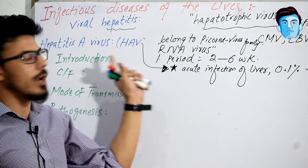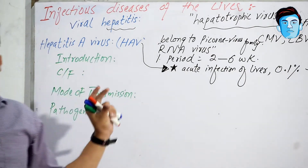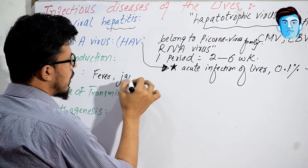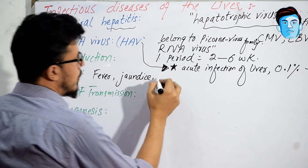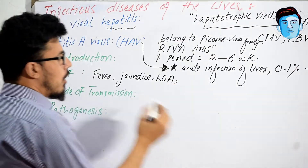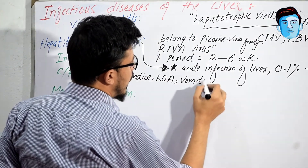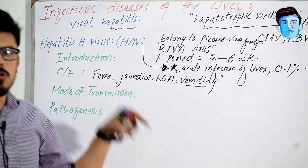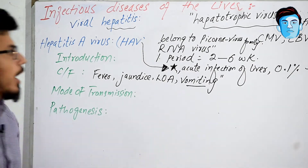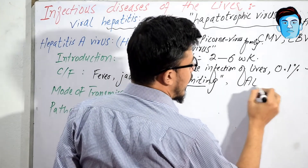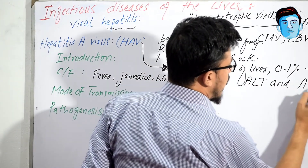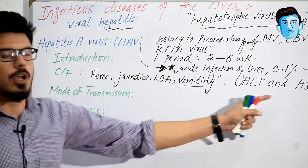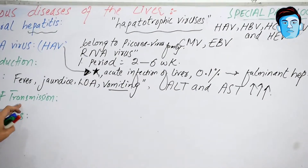Clinical features of hepatitis A viral infection include non-specific symptoms such as fever and jaundice due to retention of bilirubin, loss of appetite, and vomiting — because the liver is enlarged and encroaches on the stomach and esophagus. Additionally, serum transaminases ALT and AST are raised from their normal values.